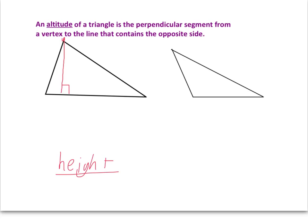You could certainly have an altitude from one of the other vertices. So, I could draw the altitude from this vertex here and see what that looked like — it would again have to be perpendicular to the opposite side. Now, why all the words in that original definition? Well, let's look at this obtuse triangle over here. If you wanted to draw the altitude from this side, it gets a little tricky. Because if you want to go perpendicular to the opposite side, what you'd actually have to do is extend that side out, so it would actually be outside of the triangle.